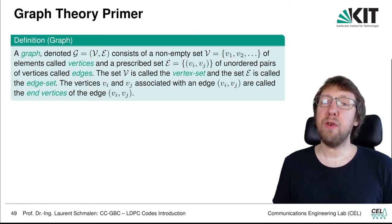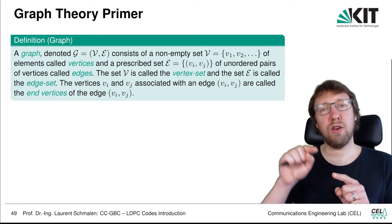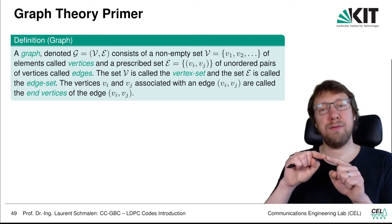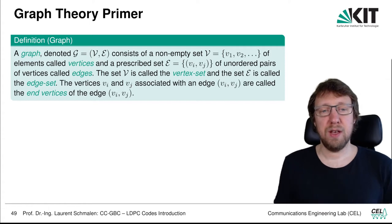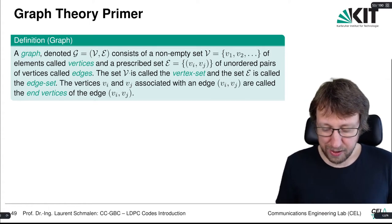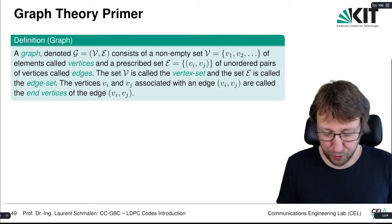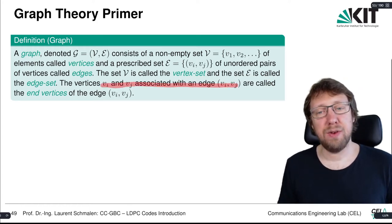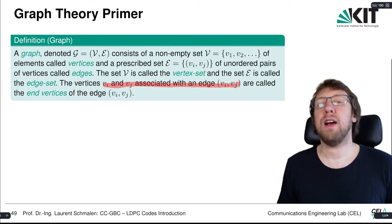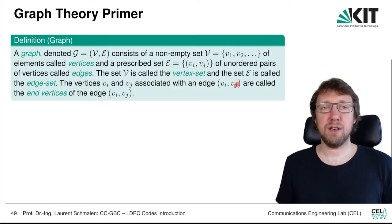If we have an edge, it means that we put a line connecting vertex V_i with vertex V_j. So the set V is the vertex set, the set E is the edge set, and vertices V_i and V_j are associated with an edge {V_i, V_j} — they are called the end vertices.